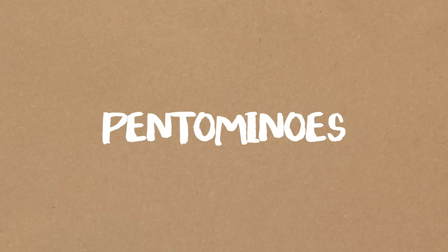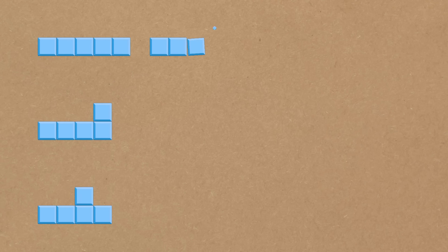So pentominoes are made up of five squares. For example, this is one of them made up of five squares. We would also have this one. We can also have this one here. One, two, three, four, five. Oh, a little snake-like one here. One, two, three, four, five. And in total there are 12 of these.